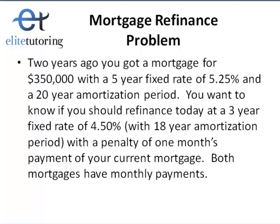We'll set up a typical refinance problem. Suppose 2 years ago you got a mortgage for $350,000 with a 5-year fixed rate of 5.25% and a 20-year amortization period. You want to know if you should refinance today at a 3-year fixed rate of 4.50% with an 18-year amortization period, with a penalty of 1 month's payment of your current mortgage. Both mortgages have monthly payments.